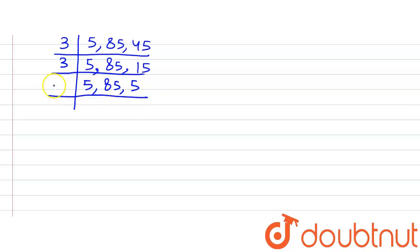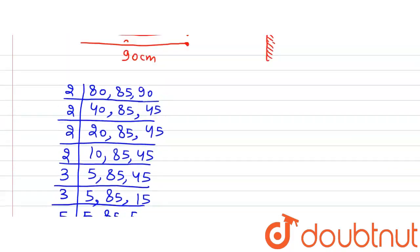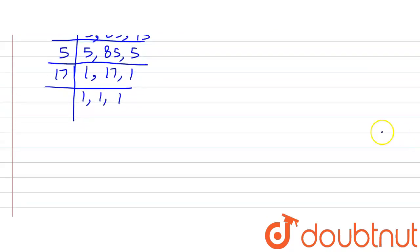None of these numbers is divisible by 3, so we move to the next prime number, which is 5. Dividing by 5 we get 1, 17 and 1. Now 17 is a prime number so it is divisible by itself only, giving us 1, 1 and 1.